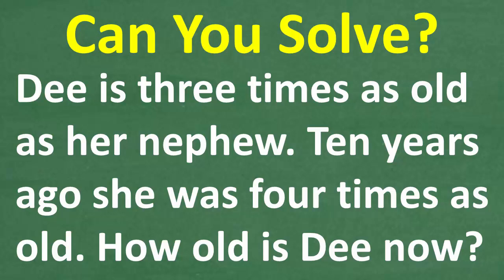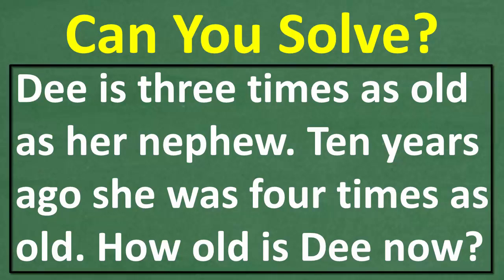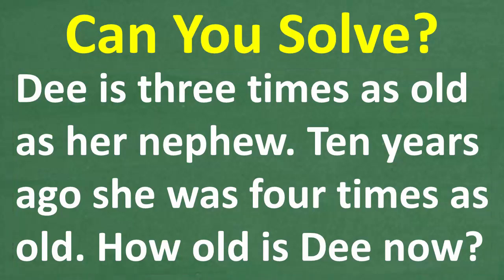Get ready to put your math skills to work to solve this interesting math word problem. Let me go ahead and read the problem. D is three times as old as her nephew. Ten years ago, she was four times as old. How old is D now? That is the question.